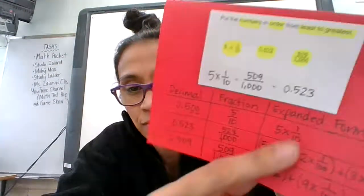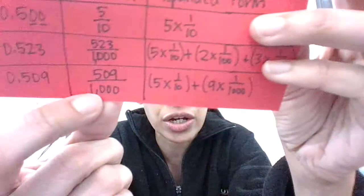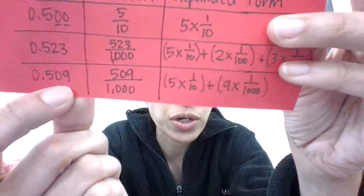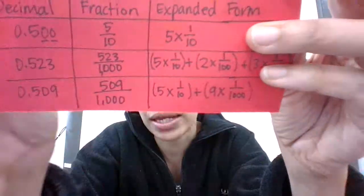And for the last one right here, 509/1000, that's in fraction form. So I put it here in fraction form. I wrote decimal way, and then I wrote the expanded form.